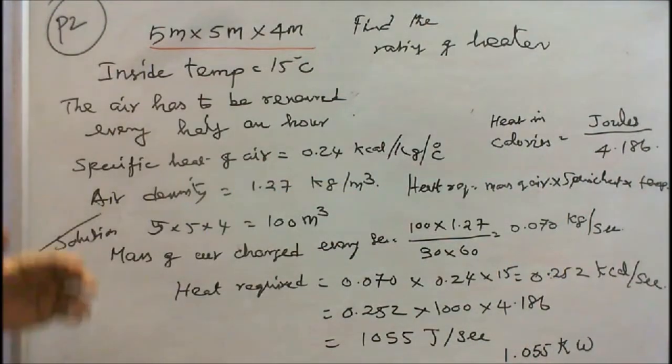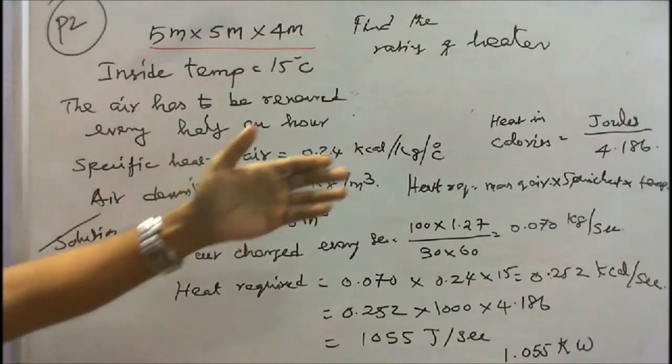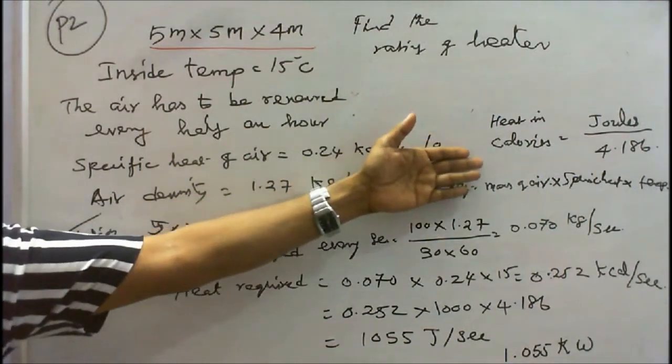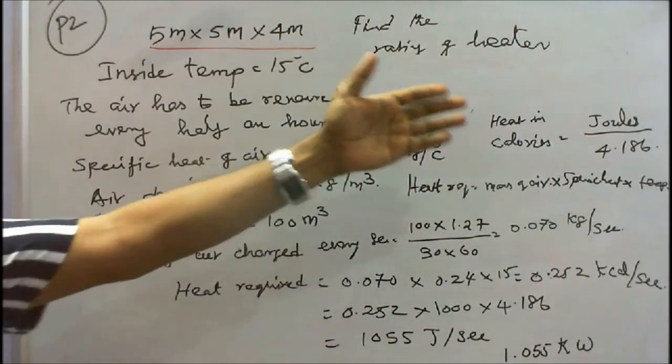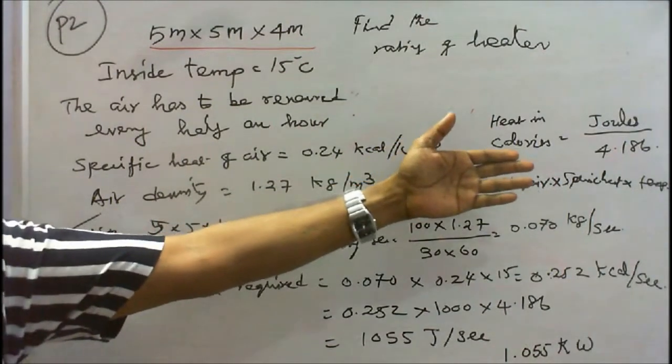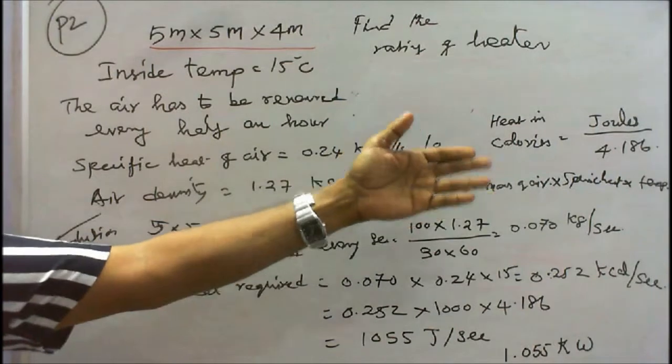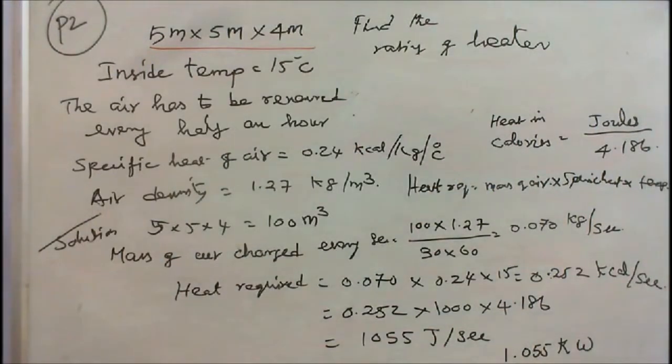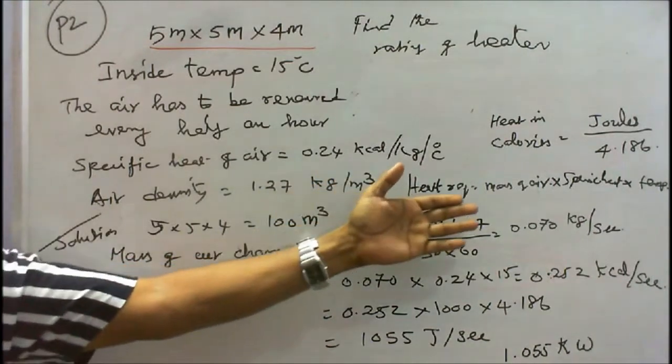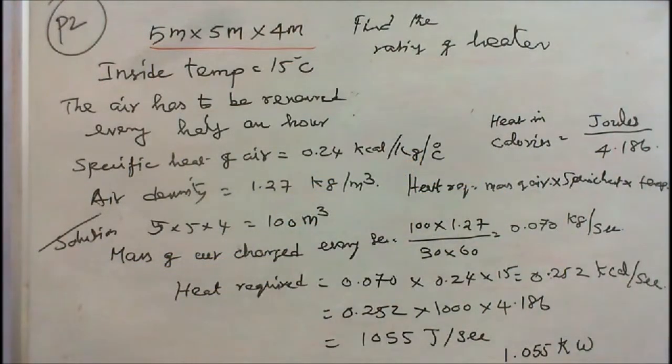We have to know one thing: heat in kilocalories - 1 kilocalorie equals 4.196 joules. That we have to know. And we have to know heat required equals mass of air times specific heat times temperature. These two formulas are very important.